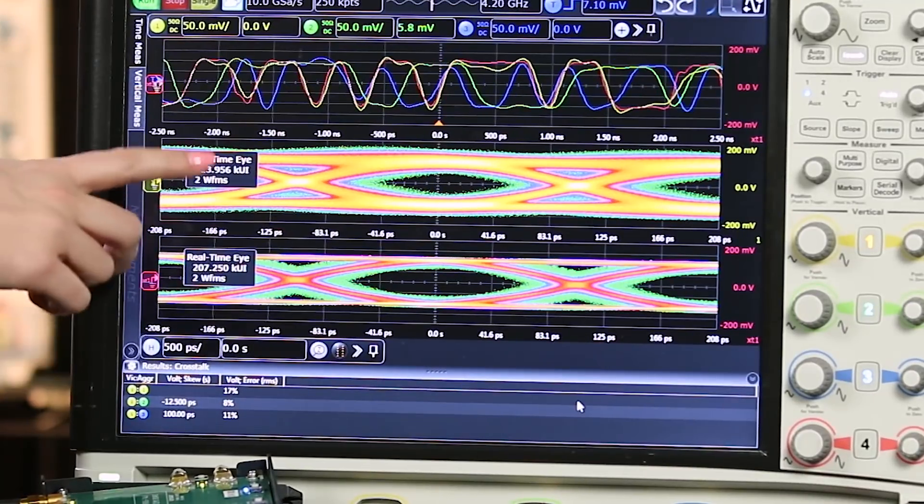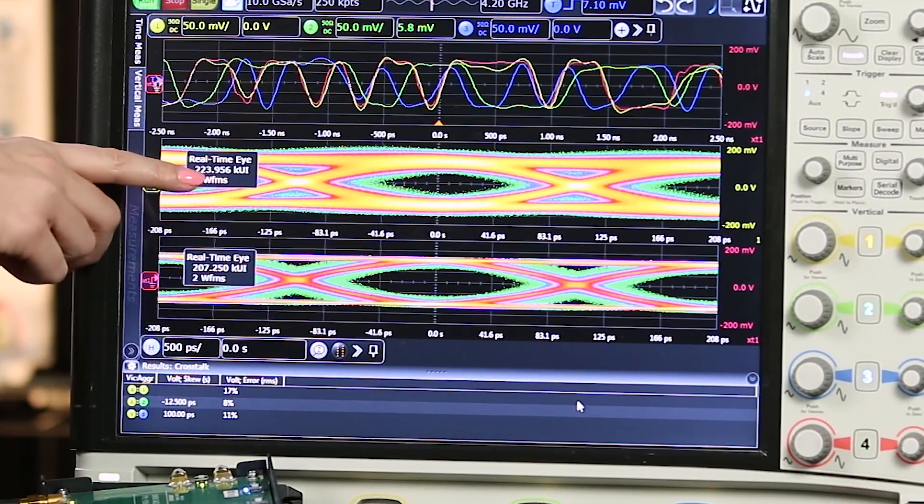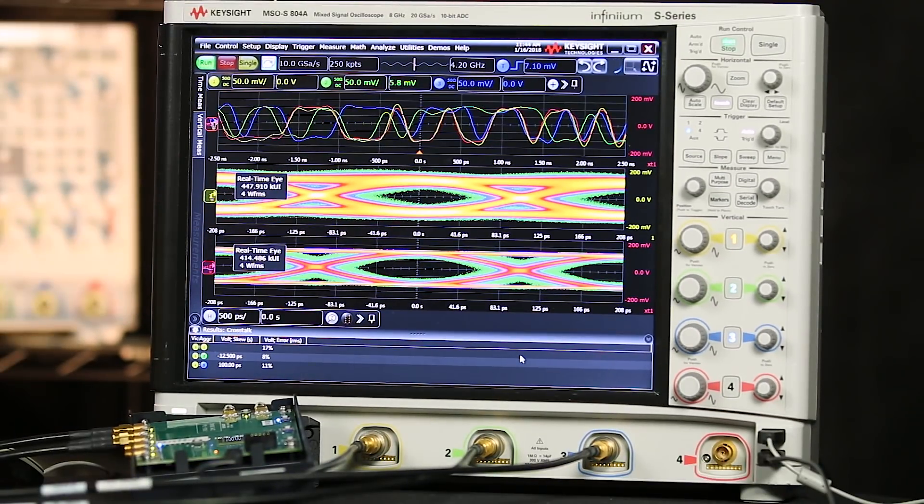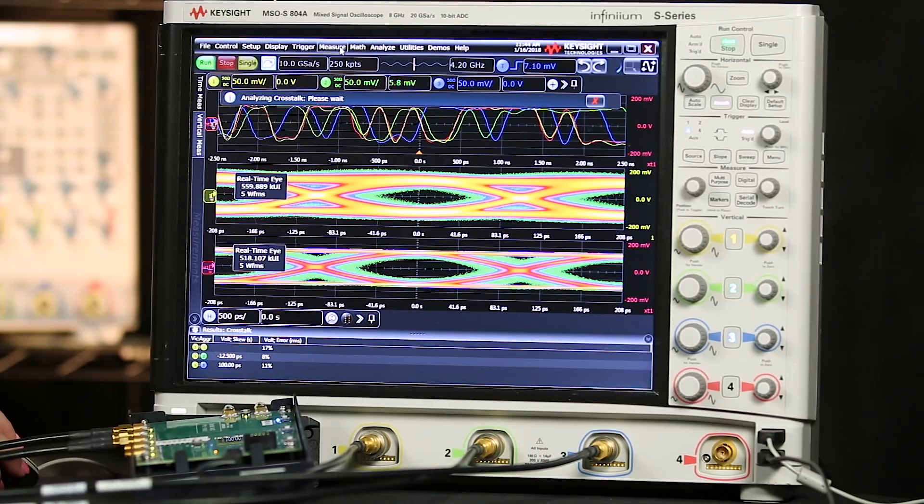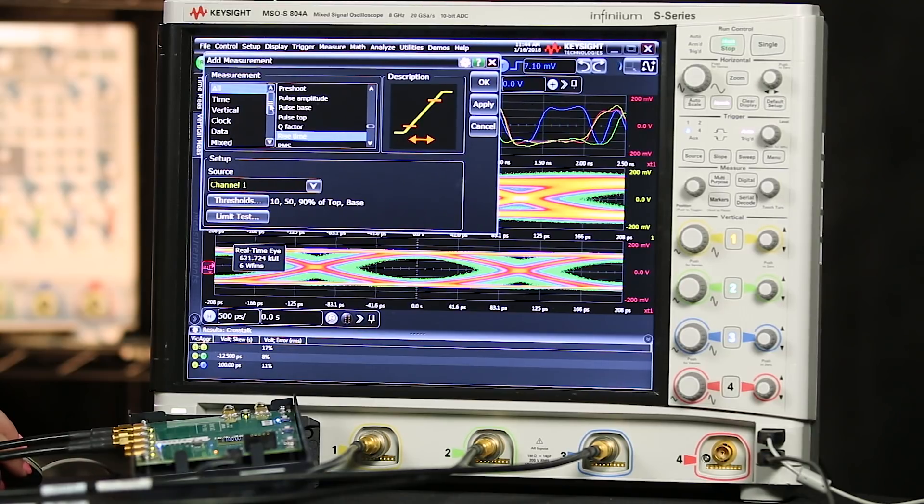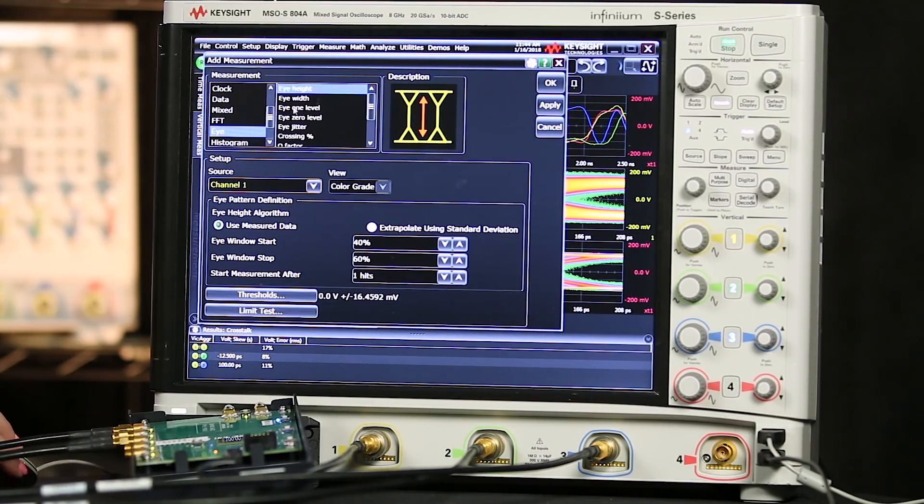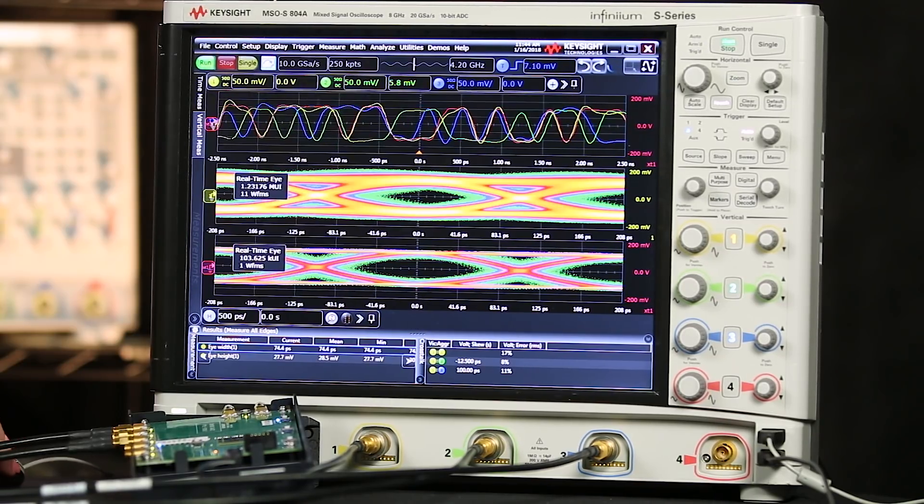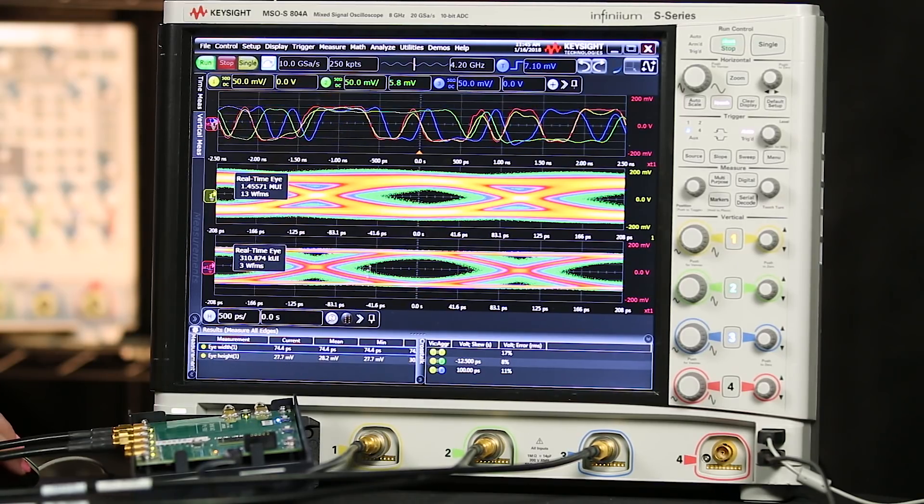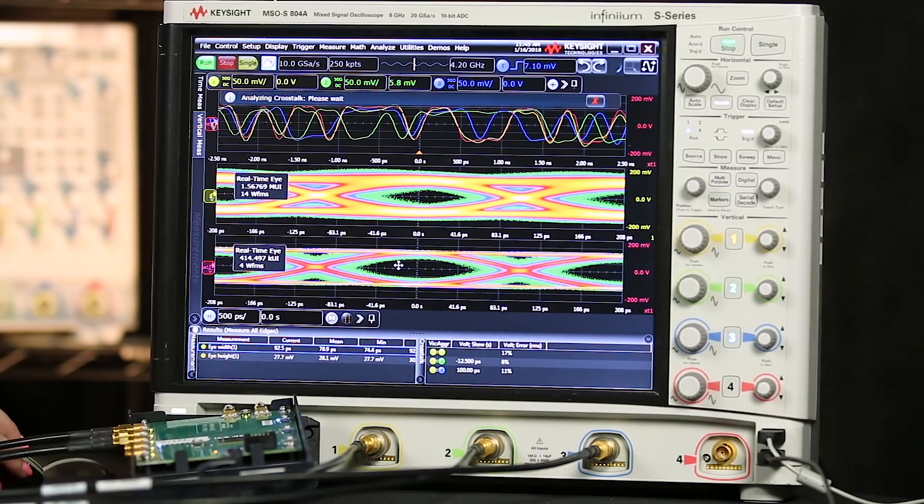Now you can see just how much more open the eye actually is compared to our original signal as is. To quantify how much more open the eye is, I can add some measurements. So we'll go to the measurement menu, add measurements, measurements, and over here I'm going to choose eye, and then we'll add eye height and eye width. Down here are my measurements. So my eye width is 74 picoseconds, and my eye height is only 27.7 millivolts. Let's see how that compares to the signal with crosstalk removed.